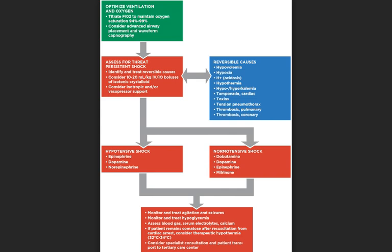For normotensive shock, consider dobutamine, dopamine, epinephrine, and milrinone. Also consider treating reversible causes such as hypovolemia, hypoxia, acidosis, hypothermia, hypo- or hyperkalemia, cardiac tamponade, toxins, tension pneumothorax, pulmonary thrombosis, or coronary thrombosis.